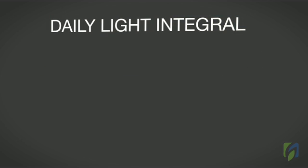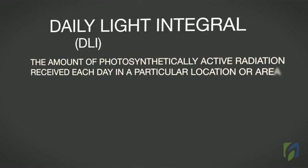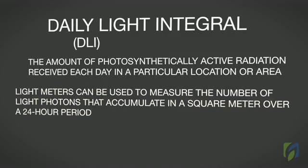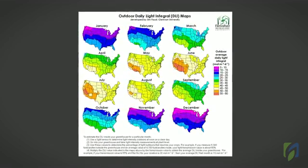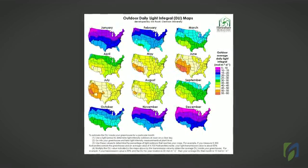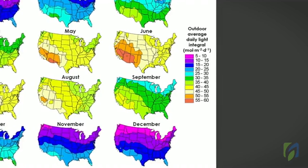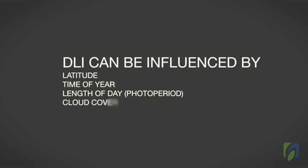Daily light integral, or DLI, is the amount of photosynthetically active radiation — the number of light particles or photons — received each day in a particular location or area. Light meters can be used to measure the number of light photons that accumulate in a square meter over a 24-hour period. Daily light integral is expressed as moles of light per square meter per day. Researchers at Clemson University have developed maps of monthly outdoor daily light integral throughout the United States. Daily light integral throughout the United States varies from 5 to 60 moles of light per square meter per day, and can be influenced by latitude, time of year, length of day, photoperiod, and cloud cover.